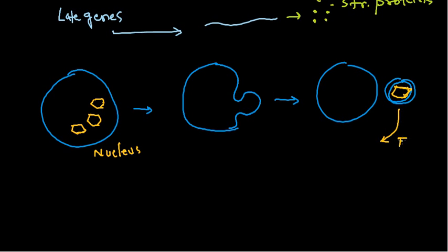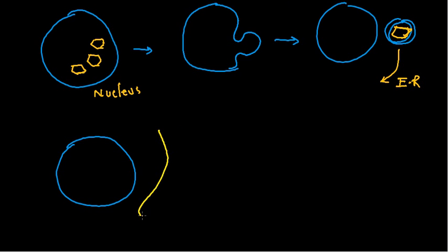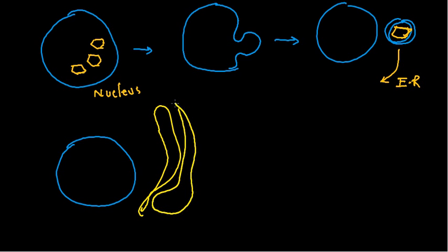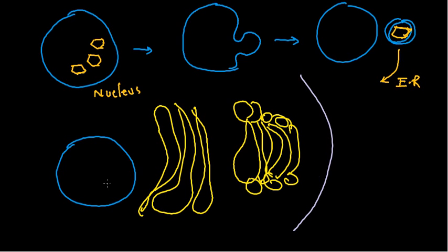It will then move towards the endoplasmic reticulum. Inside the ER, certain proteins and receptor molecules are produced. The organization is: nucleus, then endoplasmic reticulum surrounding it, then the Golgi apparatus, and then the cell membrane. This is the actual organization of these organelles within the cell.